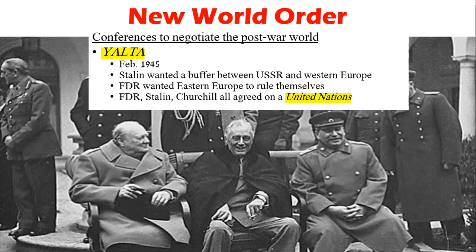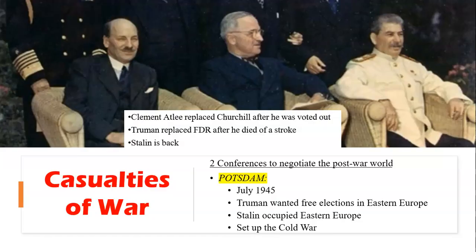The Yalta Conference was held in February 1945 to negotiate the post-war world. Stalin wanted a buffer between the USSR and Western Europe; FDR wanted Eastern Europe to rule themselves; Churchill agreed on the concept of a united nations — something with a bit more power than the League of Nations. Then there was Potsdam, the second conference, where Churchill was replaced by Clement Attlee as Prime Minister of England, and Truman replaced FDR after his death from a stroke. Stalin was one of the original three. This took place in 1945.